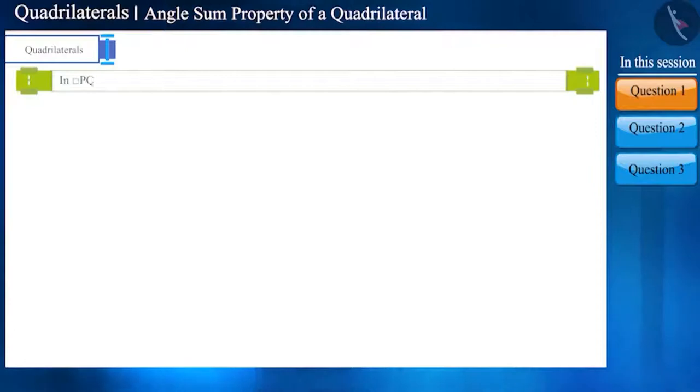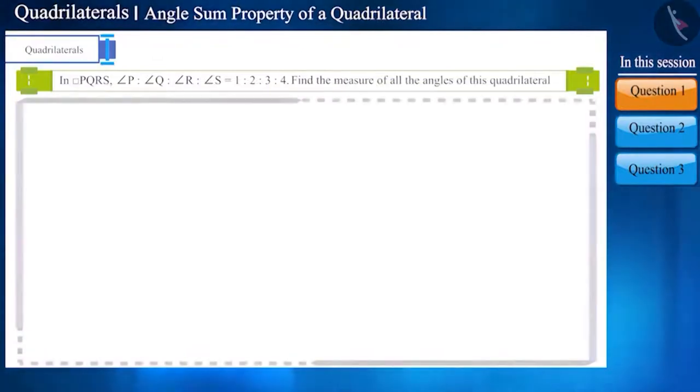In quadrilateral PQRS, angle P, angle Q, angle R and angle S are in the ratio of 1 is to 2, is to 3, is to 4. Find the measure of all its angles.